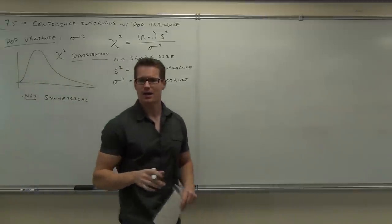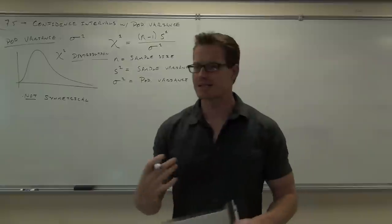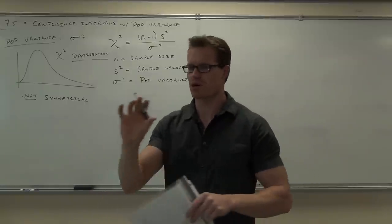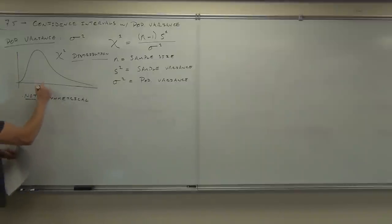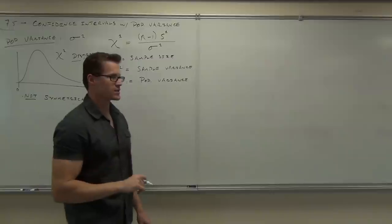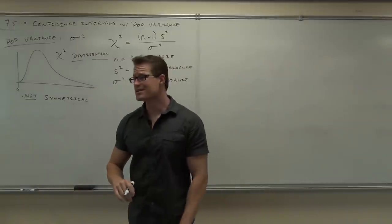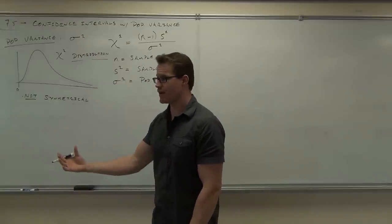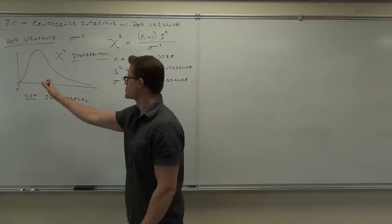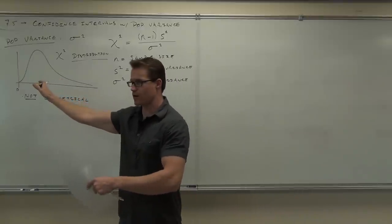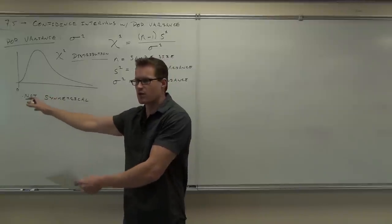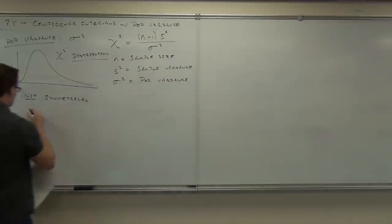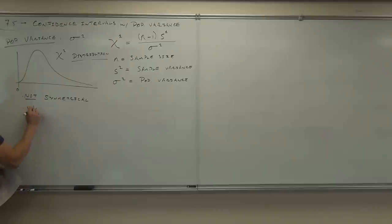Another interesting thing about the chi-square distribution: it's not like a z-score. These are chi-squared scores, which means there's no 0 in the middle. The 0 is actually off to the left-hand side, because standard deviation and variance can't be 0 or negative. So all of our distribution of variances is positive — values are non-negative.